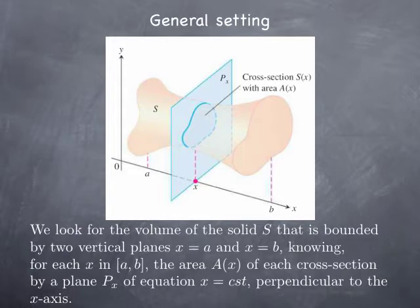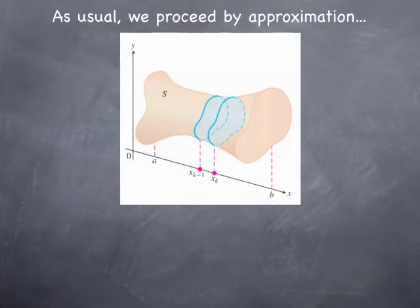What we know is that each time we cut this solid by a vertical plane, one that is of the form x equals constant for a constant between a and b, it's going to cross the solid S along some plane region. We assume that we know the area of that cross-section by px, we're going to call that A(x). In other words, we have a function that gives us the area of the cross-section by a plane perpendicular to the x-axis.